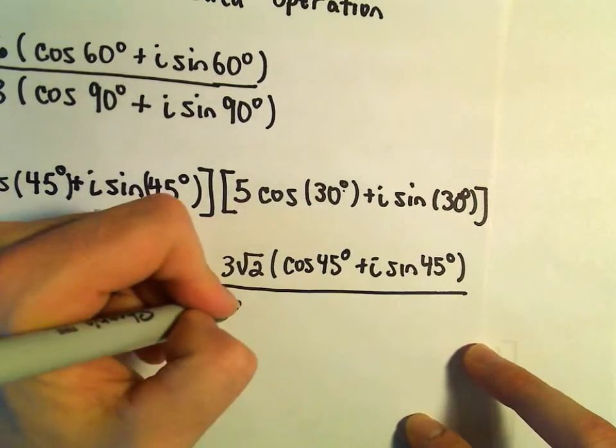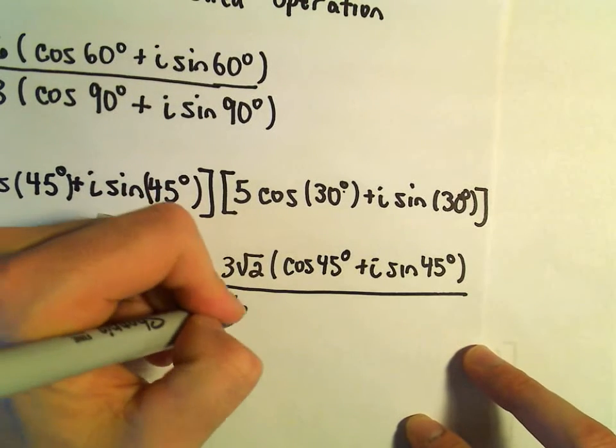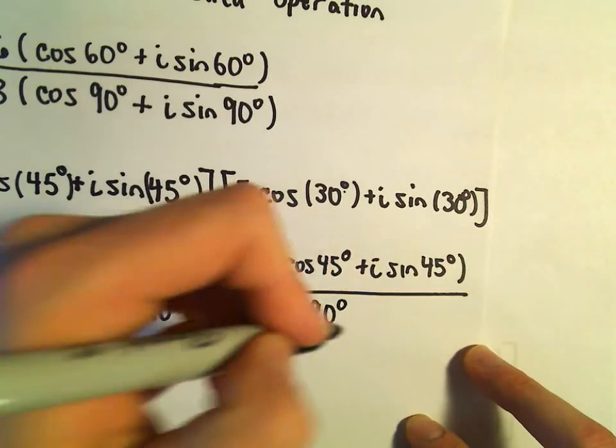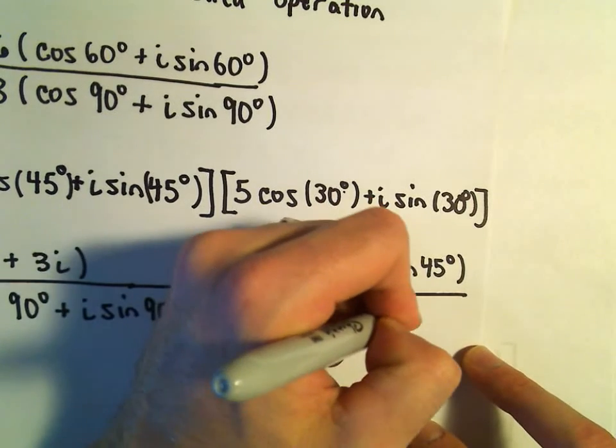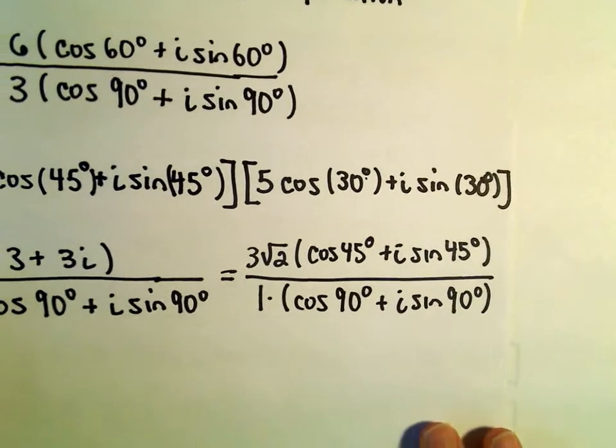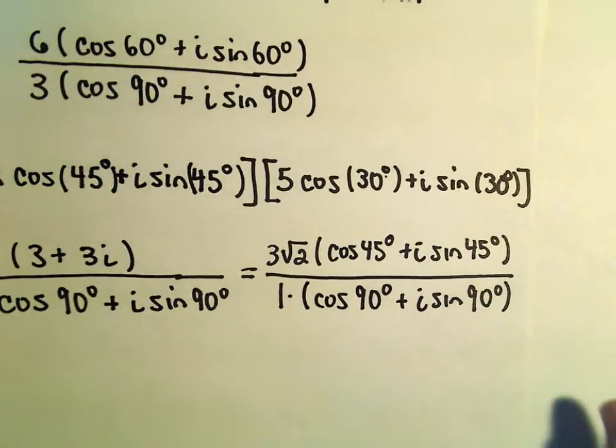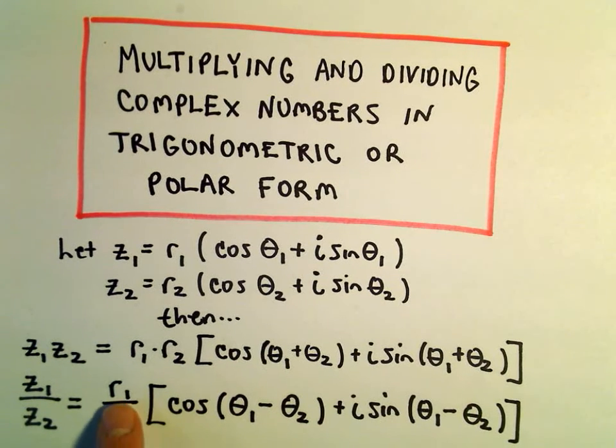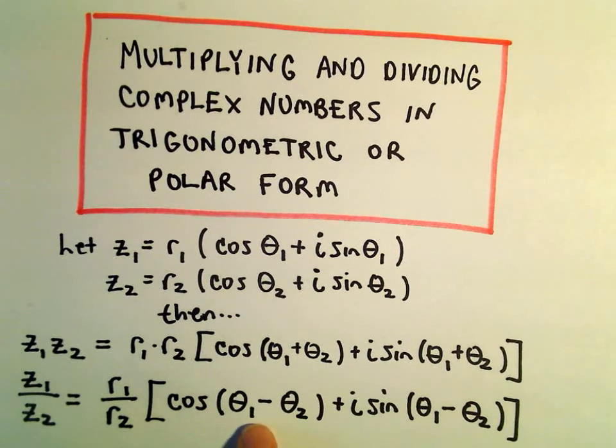Okay, that's all over - we can even write this as 1 times cosine of 90 degrees plus i sine of 90 degrees. But now we've seen from the other examples, all we do when we're dividing, we simply divide r1 by r2, and then we subtract the angles.